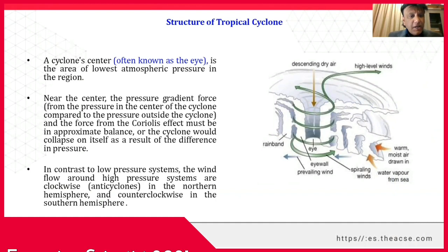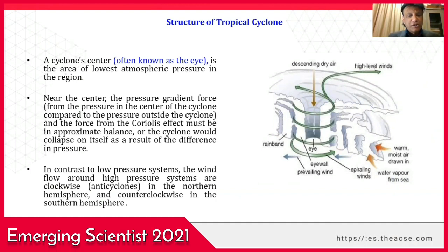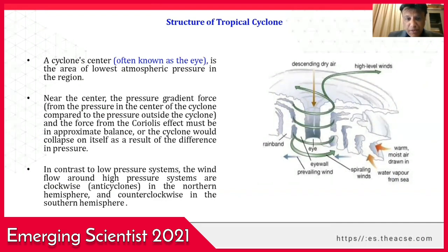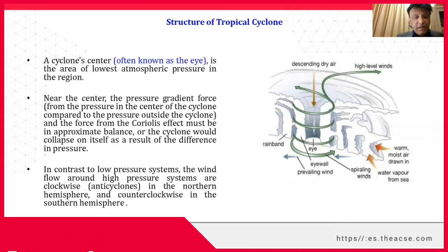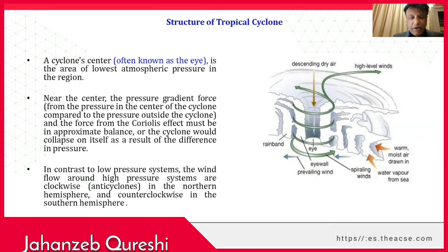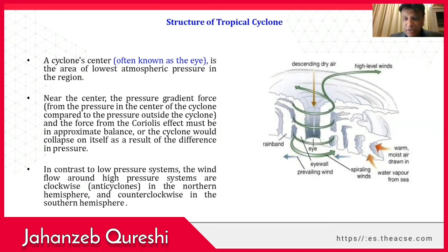In contrast to low pressure systems, the wind flow around high pressure systems, that is anti-cyclones, are clockwise in the Northern Hemisphere, while they are counterclockwise in the Southern Hemisphere.